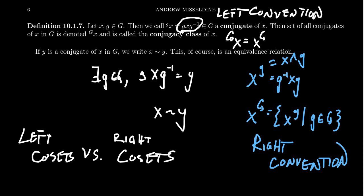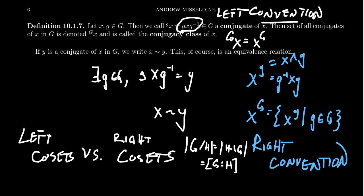The difference between left and right conjugation is analogous to the difference between left and right cosets. The number of left cosets equals the number of right cosets — it makes no difference which one you use — and that's what we define as the index of the group. So in this lecture series we're going to use the left convention as the dominant convention, though there are some situations where we have to talk about both at the same time.